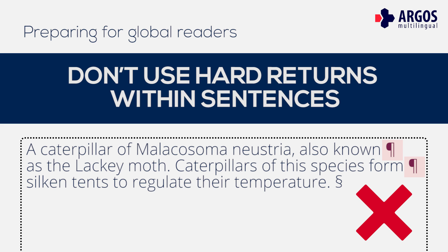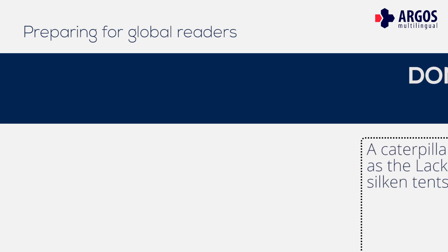This means that a sentence can appear as two separate segments to a linguist. It can be harder to understand a series of fragments than flowing text, meaning quality can suffer and sentence fragments actually pollute your translation memory, eventually making it less effective at supplying matches for linguists and gradually increasing the cost of supplying high-quality translated materials.